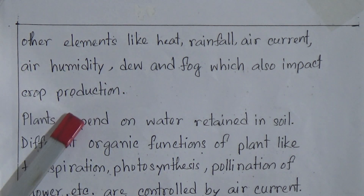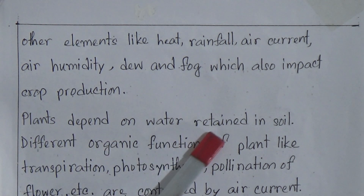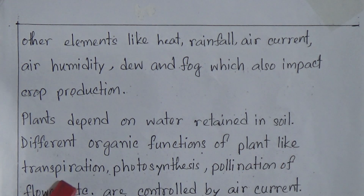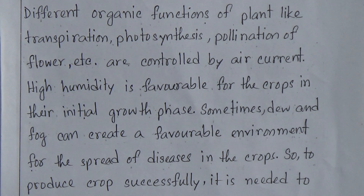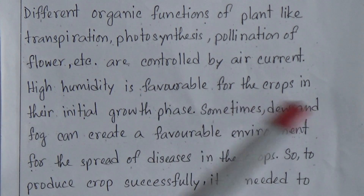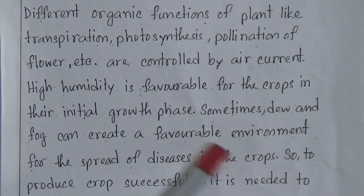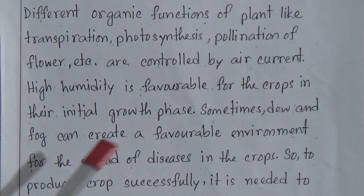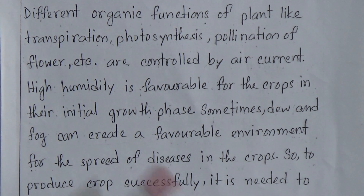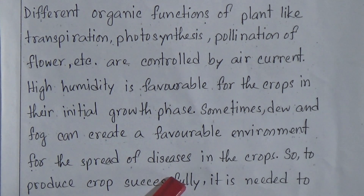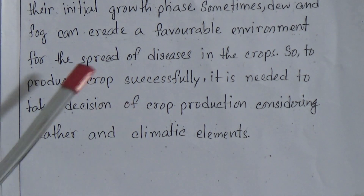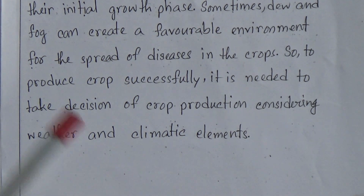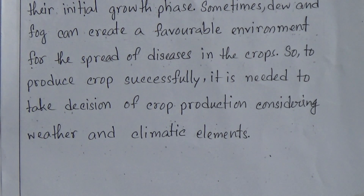These elements, except sunlight, have a great impact on growing crops. Plants depend on water retained in soil. Different organic functions of plants like transpiration, photosynthesis, and pollination of flowers are controlled by air current. High humidity is favorable for crops in their initial growth phase. Sometimes dew and fog can create a favorable environment for the spread of diseases in crops, so dew and fog are not suitable for crop production. To produce crops successfully, it is needed to consider weather and climatic elements before growing crops.